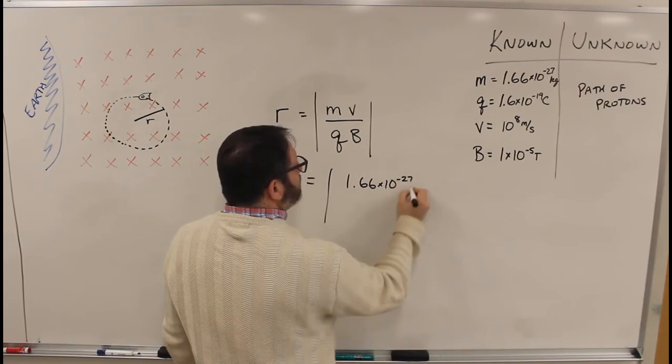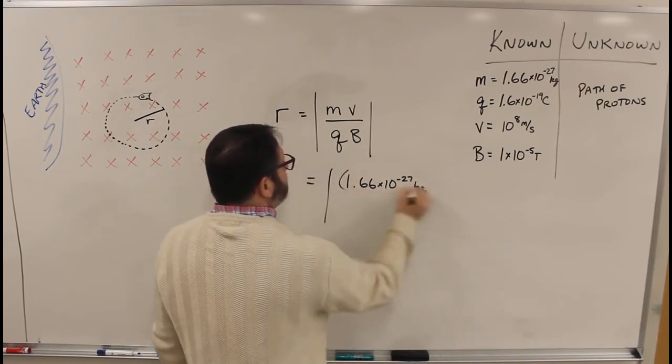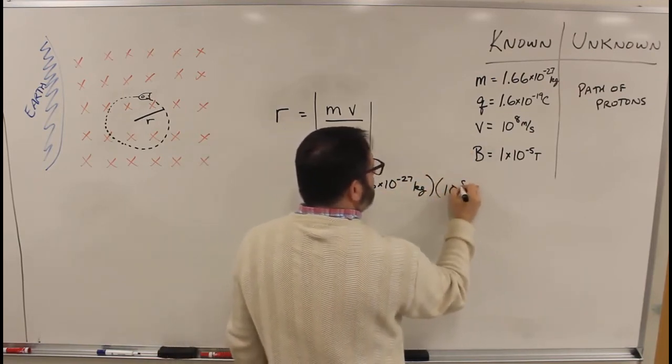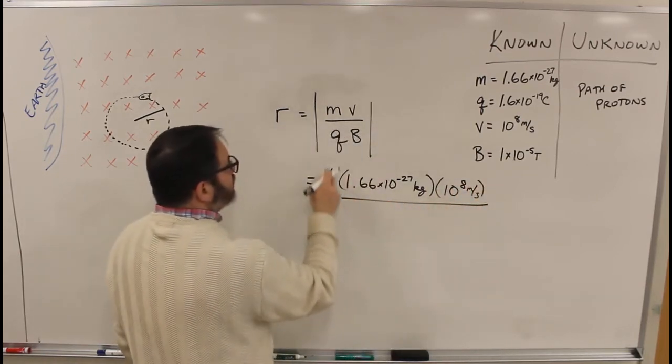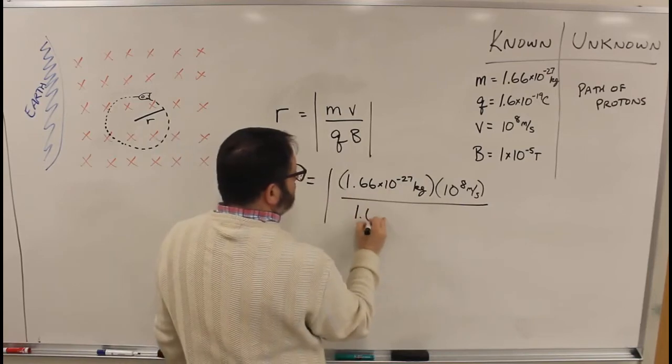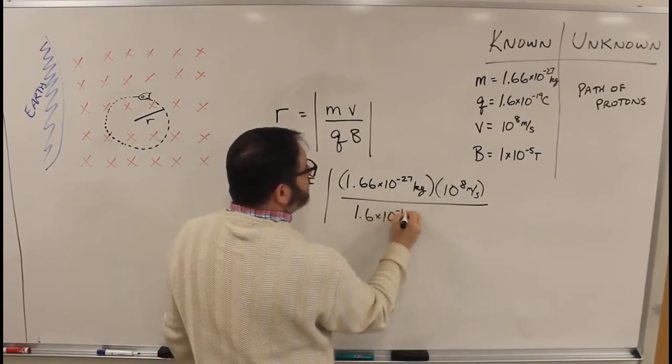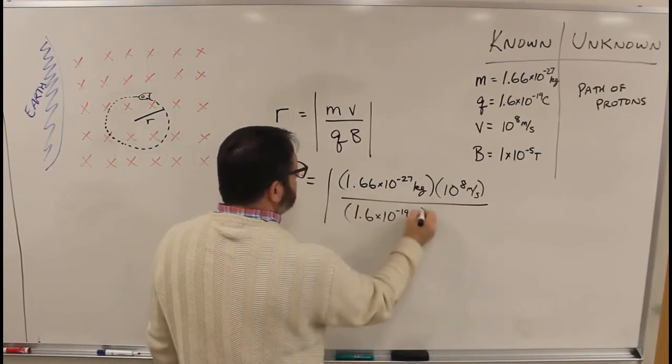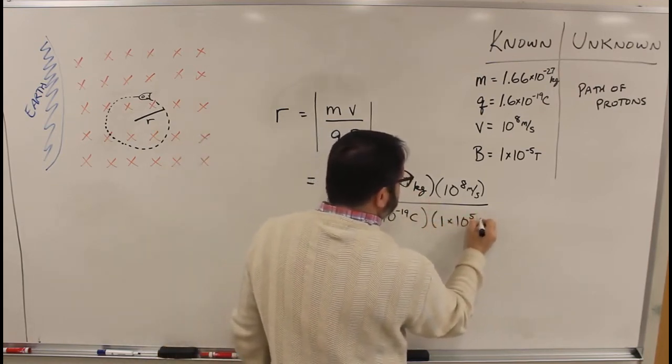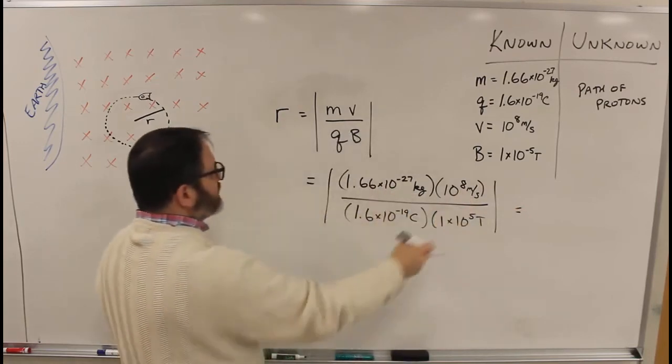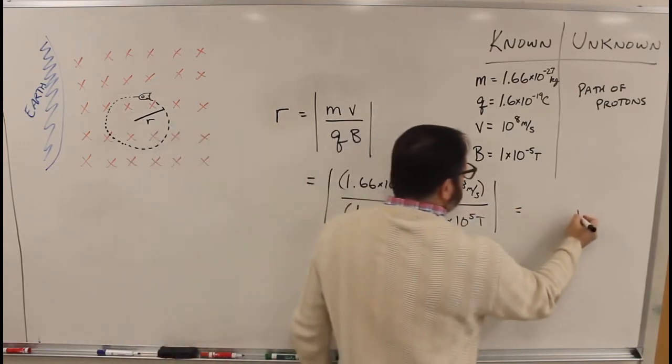1.66 times 10 to the minus 27 kilograms times 10 to the 8th meters per second over 1.6 times 10 to the minus 19 coulombs times 1 times 10 to the 5th Tesla. All of these are SI units, so I know I'm going to get meters.